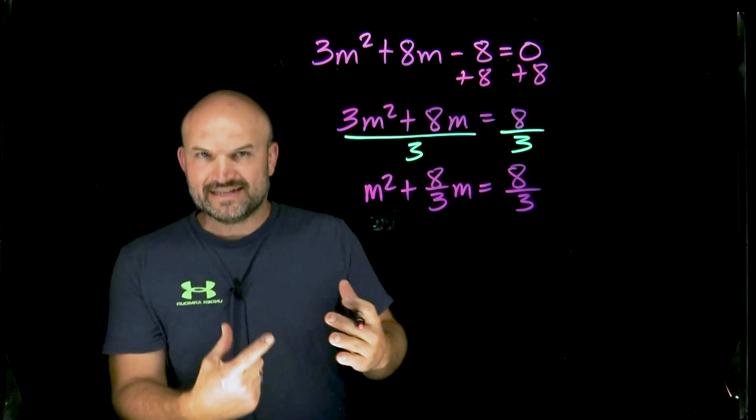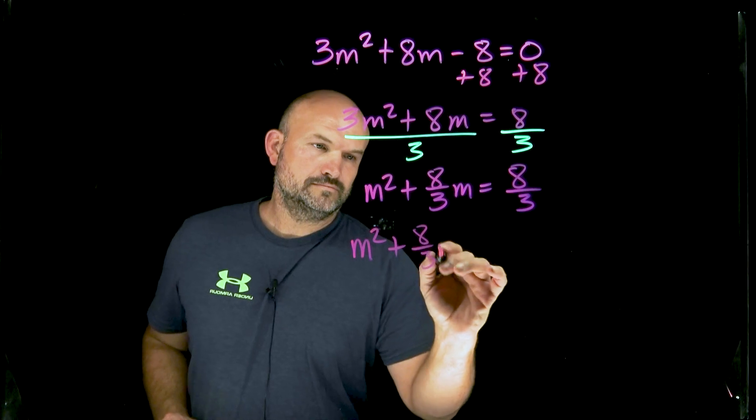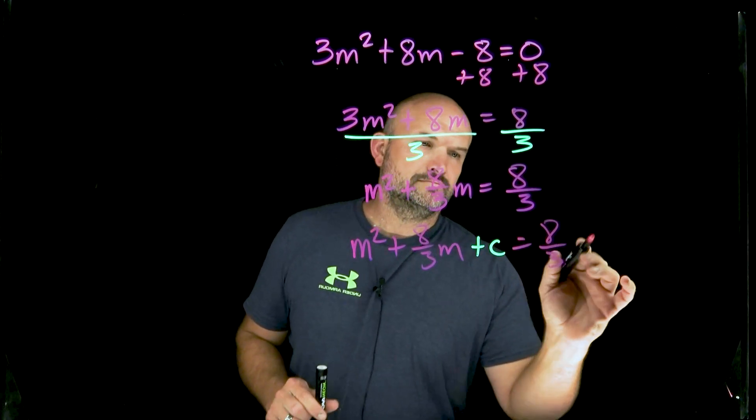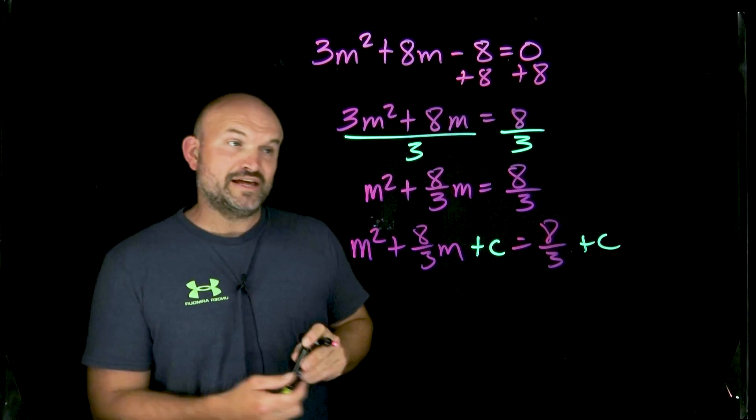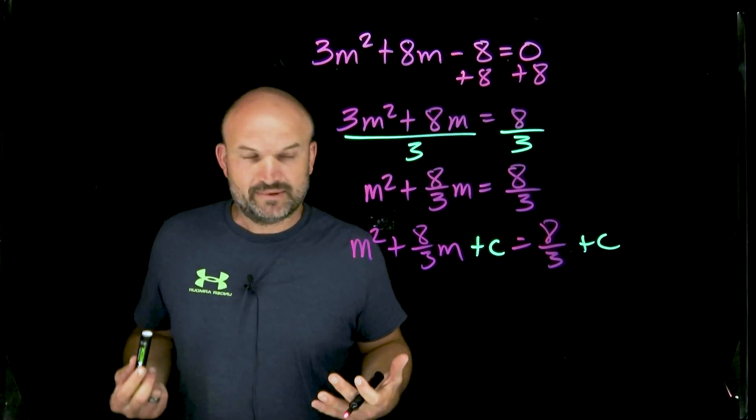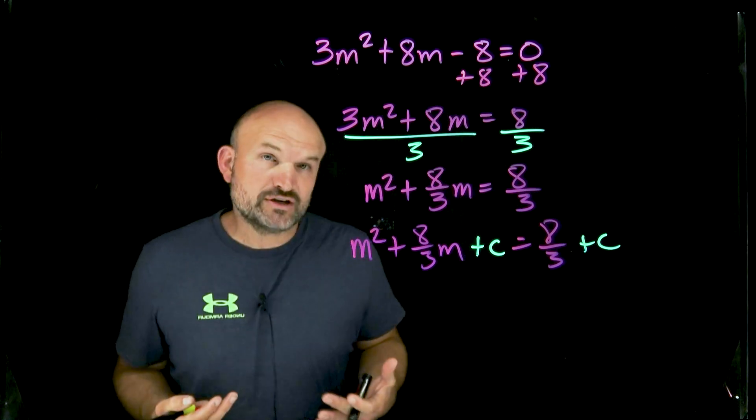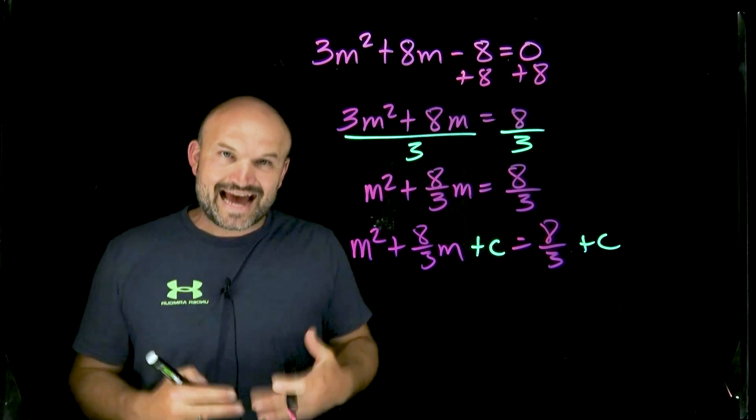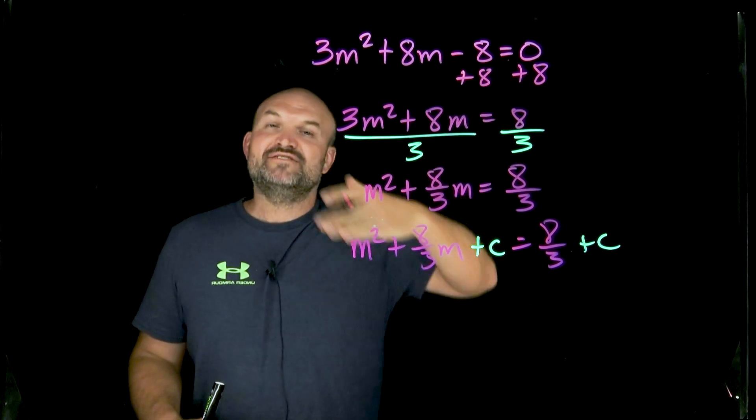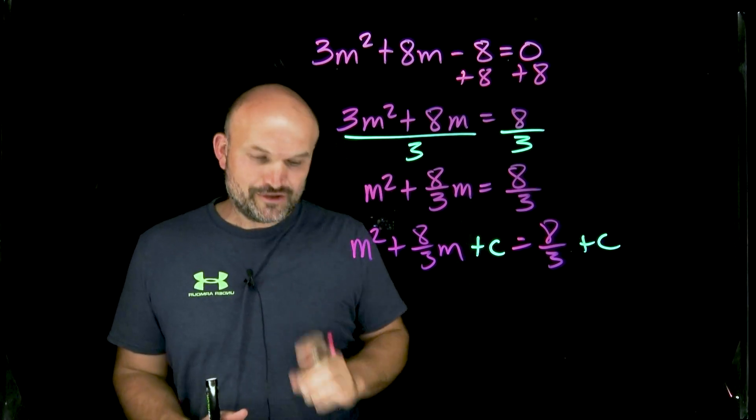And remember, whatever you do to the left-hand side, you also have to make sure you do to the right-hand side. So that is our value c. c is very important. c is going to be the value that is going to create a perfect square trinomial. Why do we want to create a perfect square trinomial? Because perfect square trinomials can be factored down to binomials squared. That is going to allow us to use our inverse operations. That's how we can avoid using factoring to solve this.